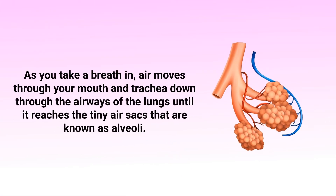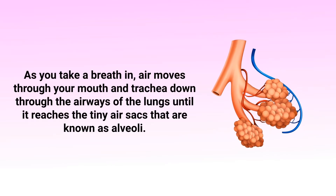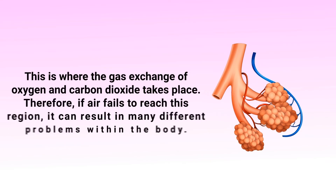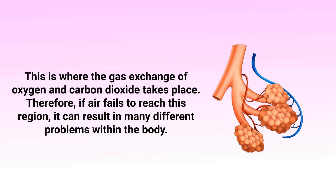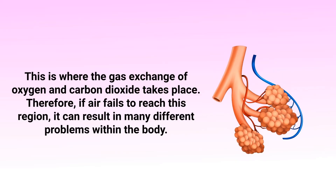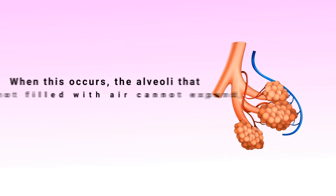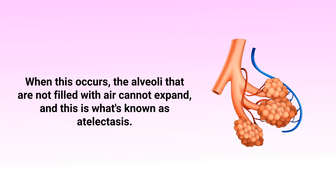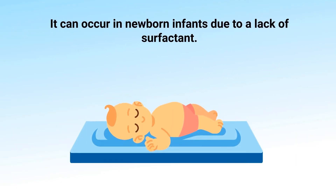As you take a breath in, air moves through your mouth and trachea, down the airways of the lungs, until it reaches the tiny air sacs known as alveoli. This is where gas exchange of oxygen and carbon dioxide takes place. If air fails to reach this region, the alveoli cannot expand — and this is what's known as atelectasis.